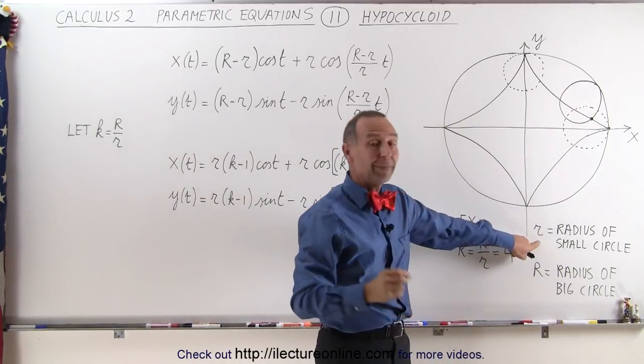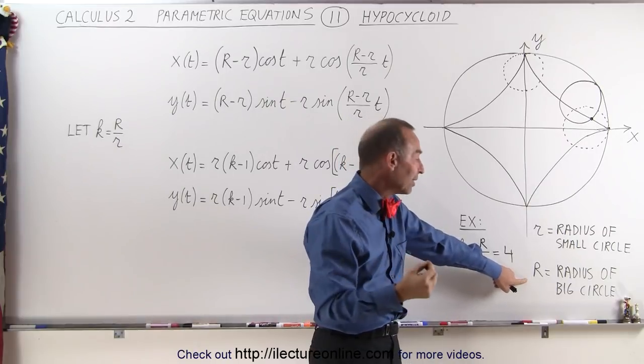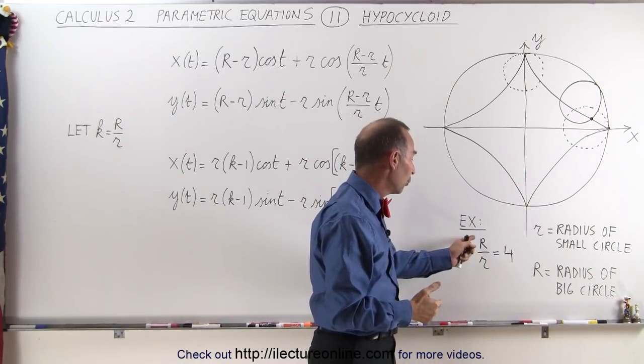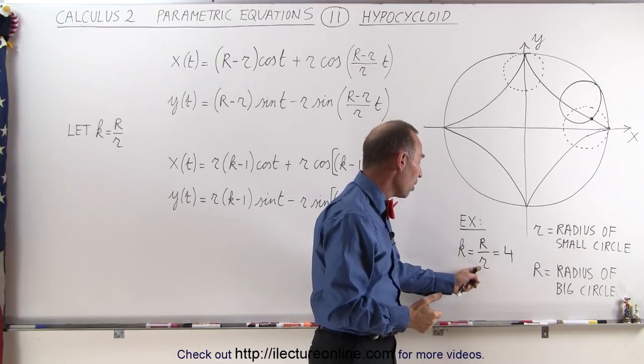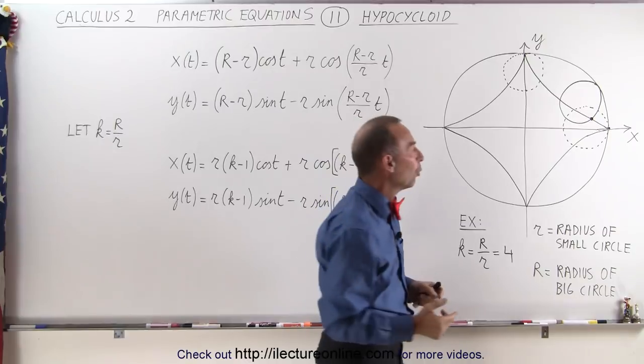The small r represents the radius of the small circle, the big R represents the radius of the big circle. And if we call the ratio big R over small r equal to k, in this case in our example it's 4 to 1.